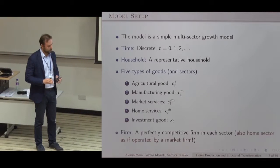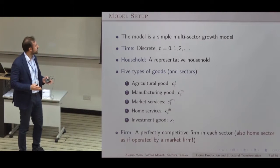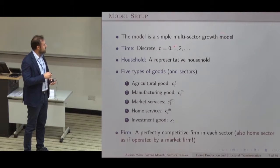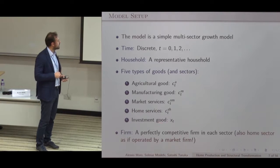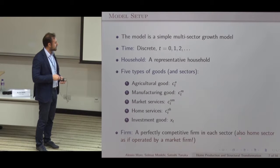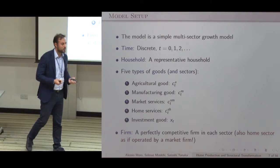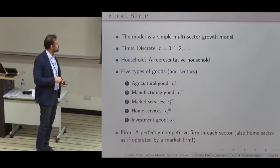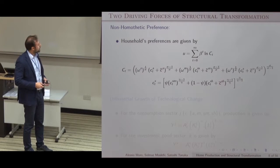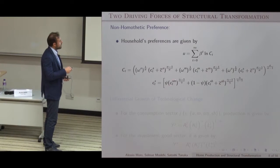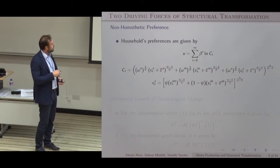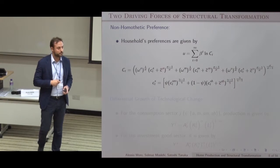The model is standard — multi-sector, time is discrete, a representative household, and five types of goods: four for consumption and one for investment. There is a competitive firm in each sector. At home, we assume there is a firm which acts as if in a competitive market. Household preferences have the usual consumption aggregator in agriculture, manufacturing, and services, where services is an aggregator of market services and home services, with non-homothetic parameters around agriculture, manufacturing, and home services. This is the most general specification.